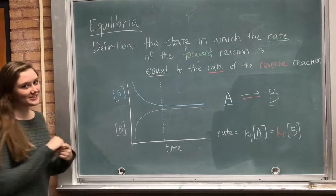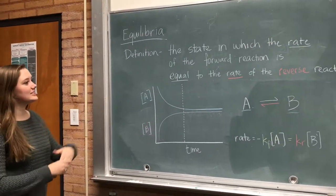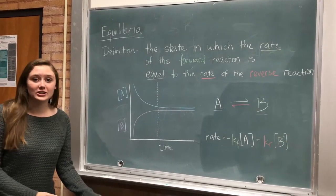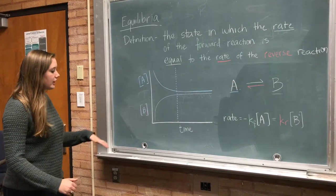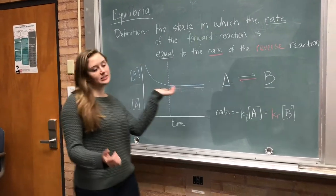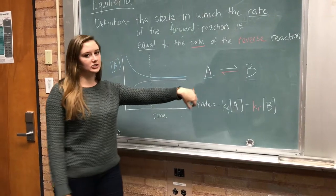So today, if you were staying awake, we were learning about equilibria. So equilibria is the state at which the rate of the forward reaction is equal to the rate of the reverse reaction. So if we look at a reaction, it's very simple, A to B, with our forward reaction in green and our reverse reaction in red.